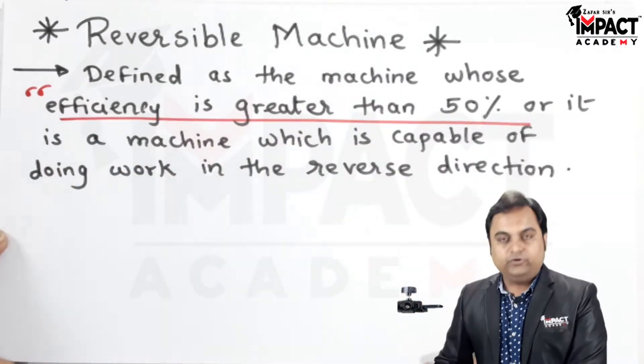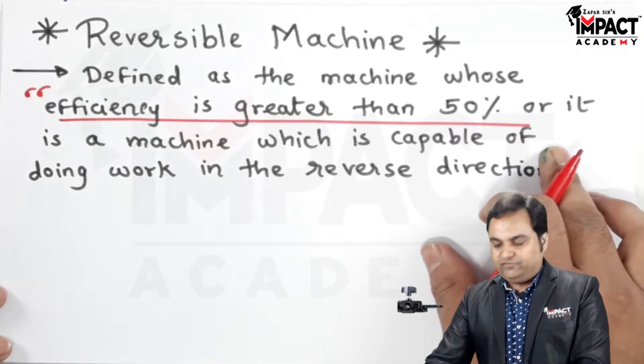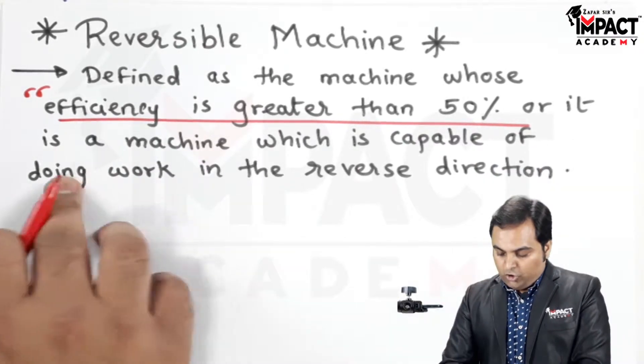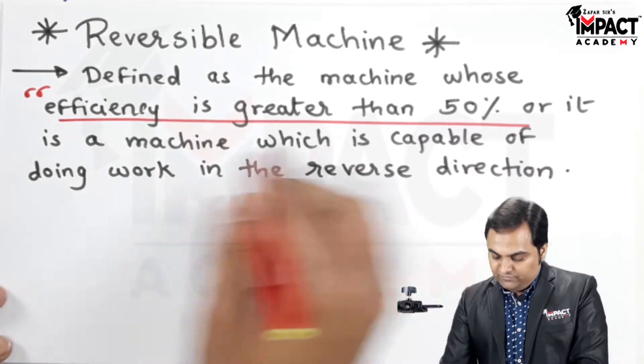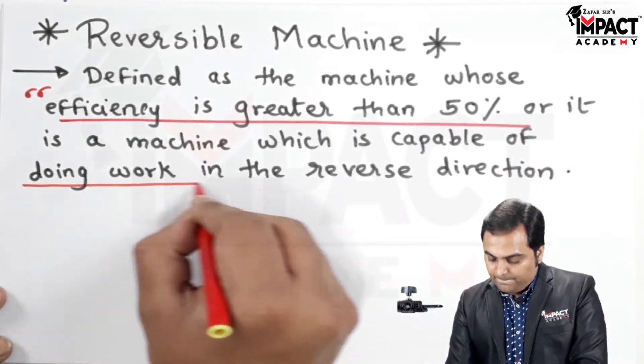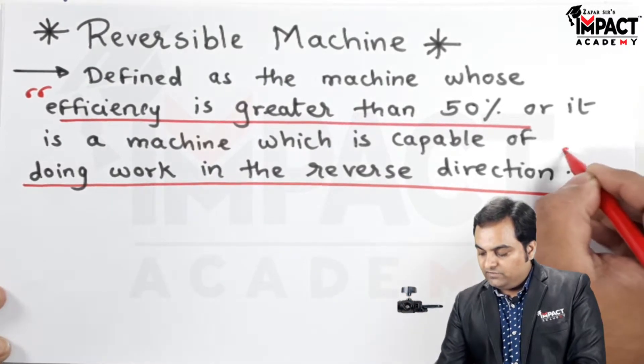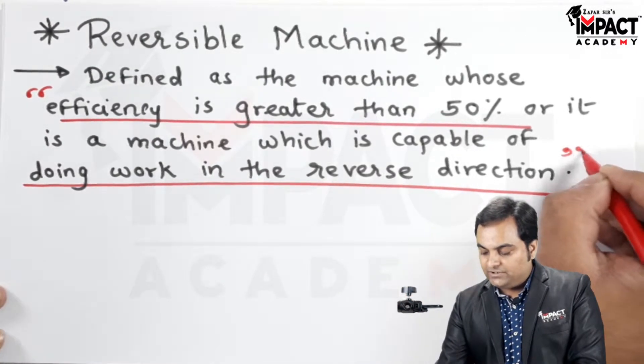A reversible machine is defined as a machine whose efficiency is greater than 50 percent, or it is a machine which is capable of doing work in the reverse direction.